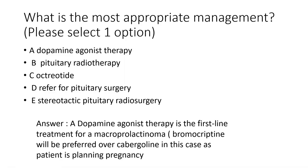Dopamine agonist therapy is the first-line treatment for macro prolactinoma. In this particular scenario, since the patient is wanting to become pregnant, the medication we should prefer to start as per the guidelines is bromocriptine, especially if she's planning for pregnancy.